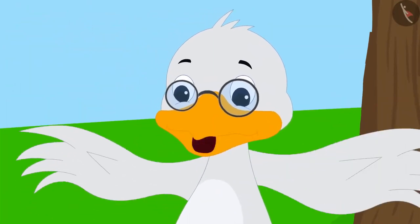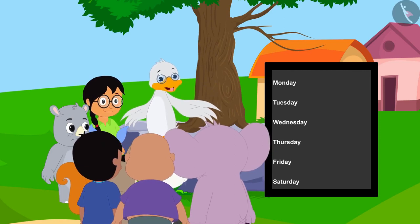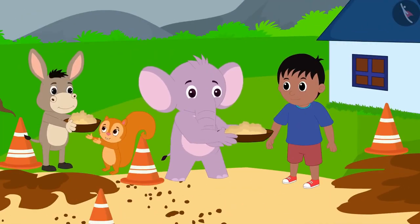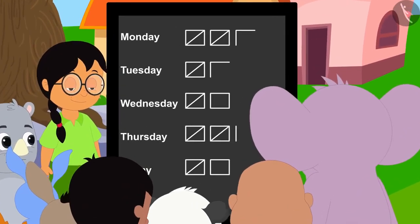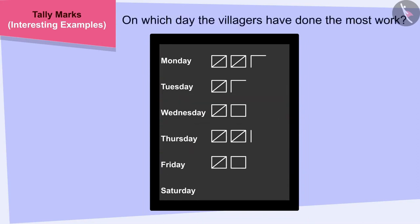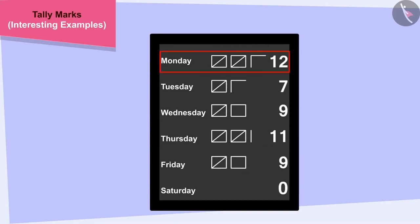When Raju and Babbole reached there to help repair the road, they saw that Uncle had drawn a table on a board. It will take us a total of 48 hours to fix the road. Every day, at the end of the day, I will record the number of hours we worked by making tally marks in this table, Uncle told the villagers. One week got over and all the villagers worked hard and got the road fixed. All the villagers are eager to know on which day the most work was done. The maximum work — 12 hours — was done on Monday.